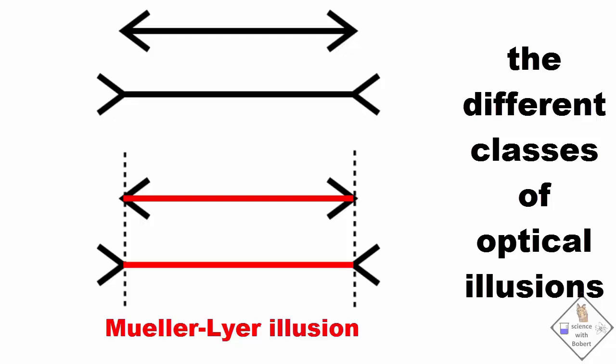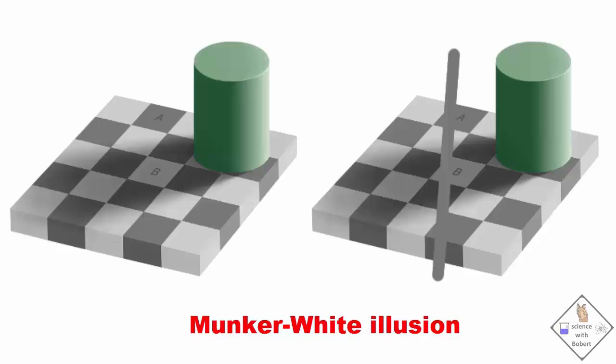This is a Munker white illusion. In this image, A and B are actually the same color. Can you believe it? I couldn't, so I took a piece of paper and cut a hole in it and covered up everything else and compared the two colors. They are the same.